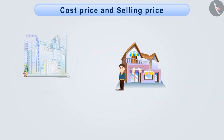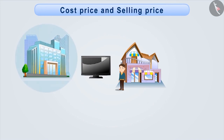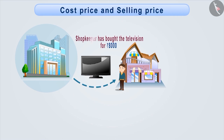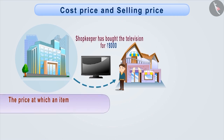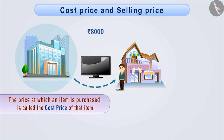A shopkeeper purchases a television from a company at a cost of Rs. 8000. The price at which an item is purchased is called the cost price of that item. Here, Rs. 8000 is the cost price for the shopkeeper. Cost price is written as CP.